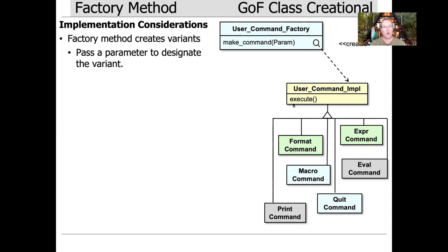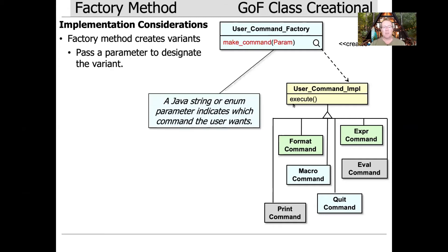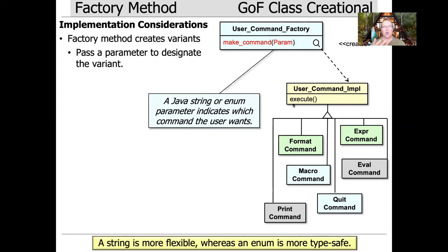If you go with the may-versus-must derive approach, how do you indicate what kind of product you want? There are a couple of different ways. The most obvious is to pass a parameter — and that raises the question of what type. You can pass a Java string, an enum, or a const integer. A string is more flexible because it's open-ended, whereas an enum is more type-safe. If you know in advance there are only going to be six commands, an enum could be fine, but if not, a string is more flexible. I typically go with the string approach.